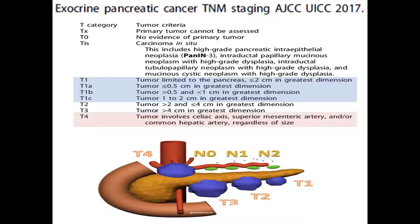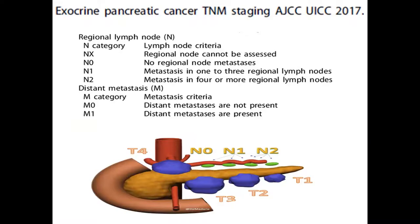As regards N, it is either N0, which is no lymph node metastasis; N1, which is one to three regional lymph nodes; or N2, which is four or more regional lymph nodes. If there is involvement outside the regional lymph nodes, it is considered distant metastasis M.